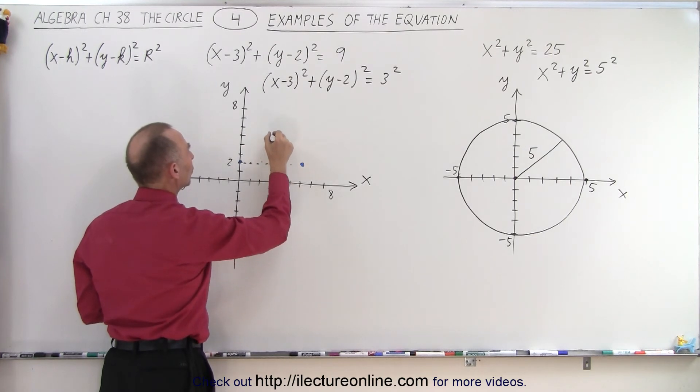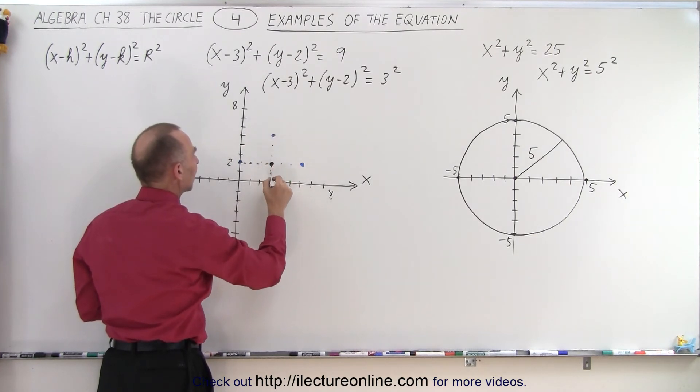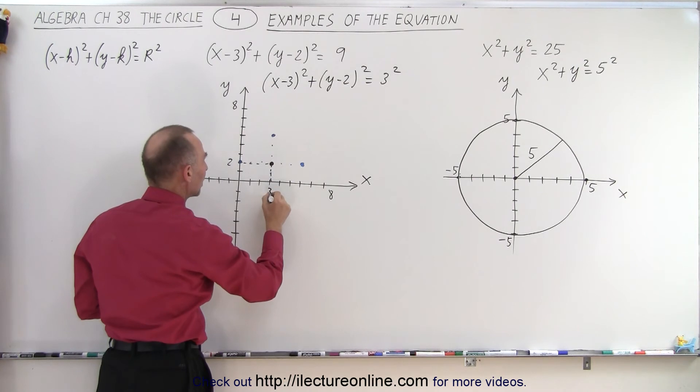Here we go, 1, 2, 3. And negative 1, negative 2, negative 3 right there.